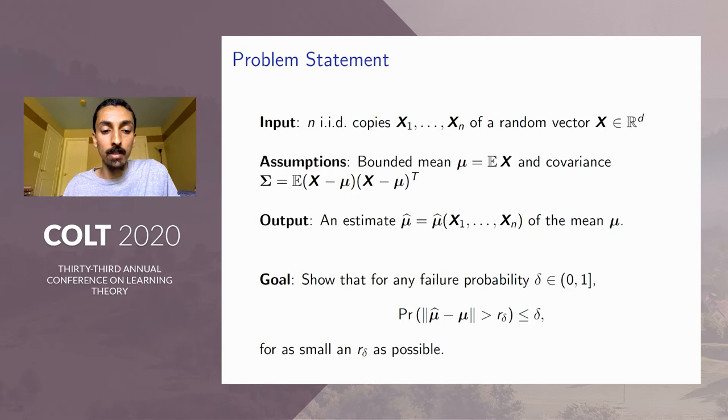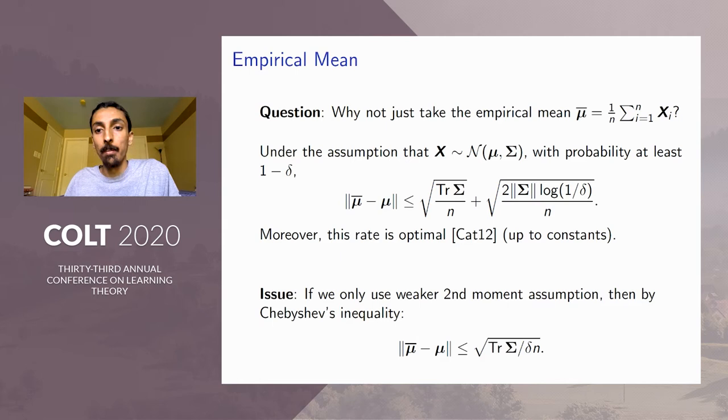Here, r_δ will depend on things like the sample size n, the dimension d, the failure probability δ, and potentially the covariance matrix of X.